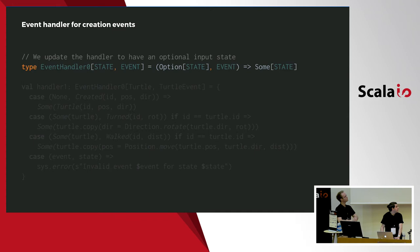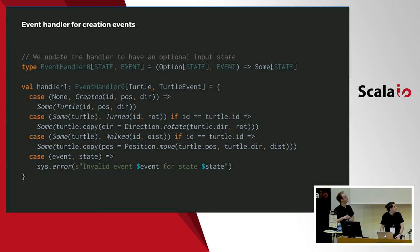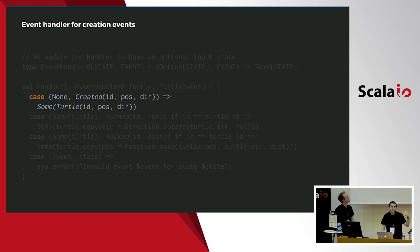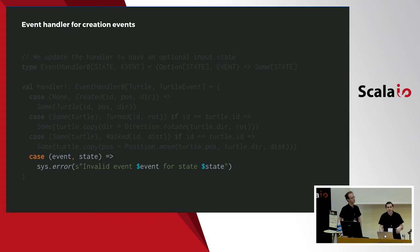Let's define an event handler. An event handler is just a function we use to fold over a sequence of events. If you look at this signature, we take an Option of state because the state may not be defined yet, and it returns an Option. We return a Some because Some is an Option. For the handler definition, we cover the cases: if you have no state on a creation event you can create the turtle; if you have a state on a turn event you can make the turtle turn; and if you are in an invalid transition we return an error.